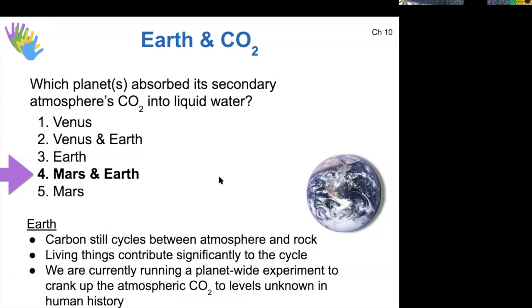On Earth, we know that the carbon continues to cycle between atmosphere and rock and between atmosphere and living things. Right now we are cranking up the CO2 levels to levels unknown in human history, but there are still mechanisms to pull that carbon back out of the atmosphere via vegetation and by changing land use patterns on our surface.